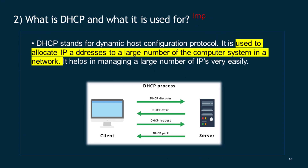Question 2: What is DHCP and what is it used for? DHCP stands for Dynamic Host Configuration Protocol. It is used to allocate IP addresses to a large number of computer systems in a network. It helps in managing a large number of IPs very easily.